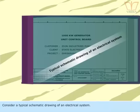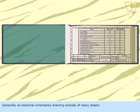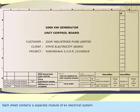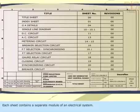Consider a typical schematic drawing of an electrical system. Generally, an electrical schematics drawing consists of many sheets. Each sheet contains a separate module of an electrical system.